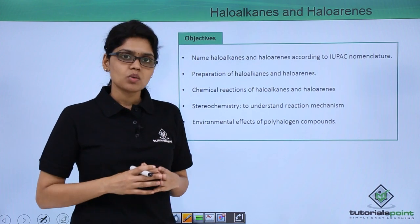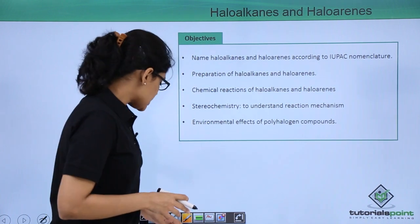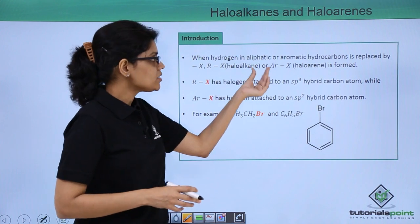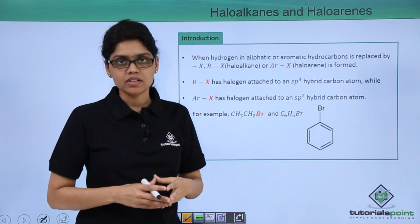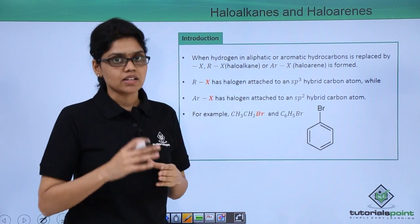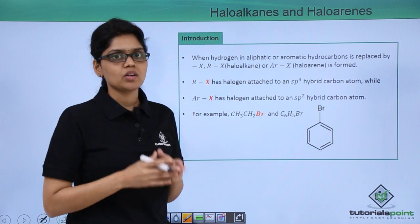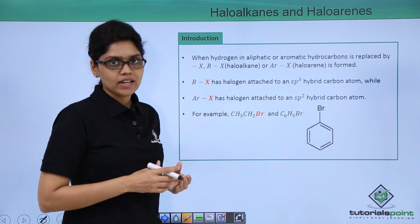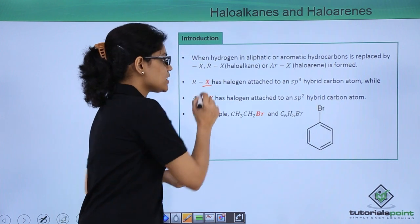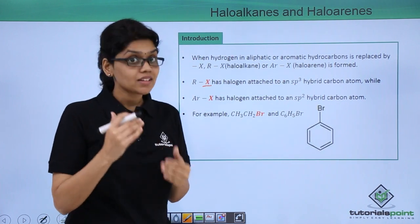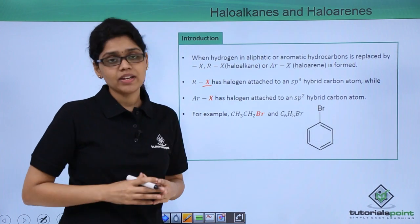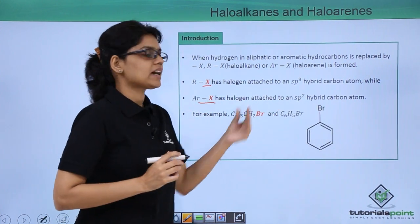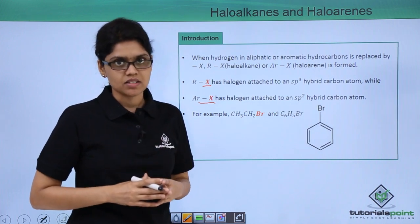Now, what are haloalkanes and haloarenes? As you can see, when hydrogen in an aliphatic or aromatic hydrocarbon is replaced by a halogen atom, we get haloalkanes or haloarenes correspondingly. In haloalkanes, the halogen atom is attached to a carbon having SP3 hybridization, whereas in haloarenes, the halogen atom is attached to a carbon having SP2 hybridization state.